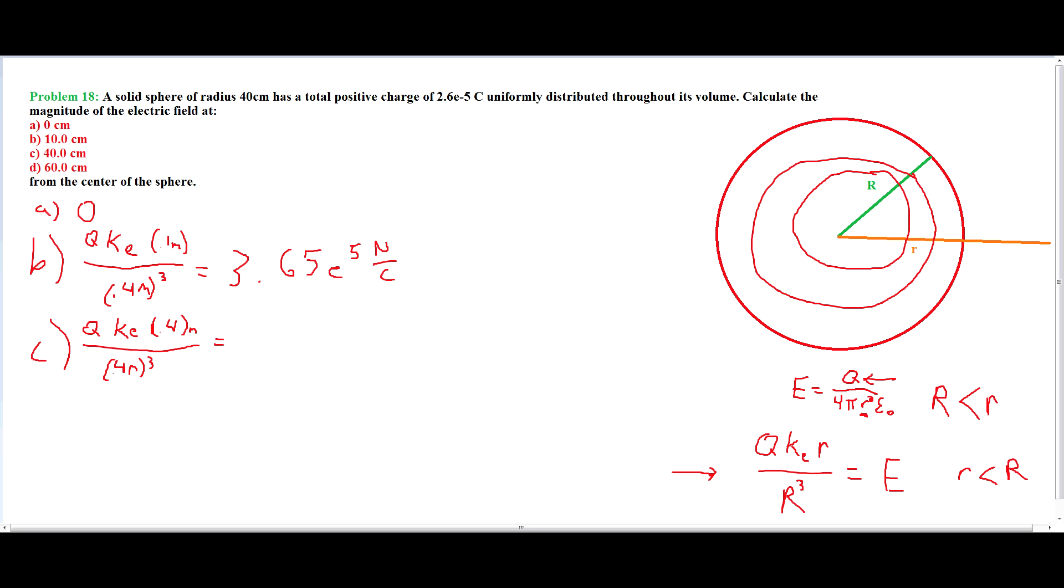divided by 0.4 meters cubed. And that will equal 1.46 times 10 to the 6th newtons per coulomb. And for D...